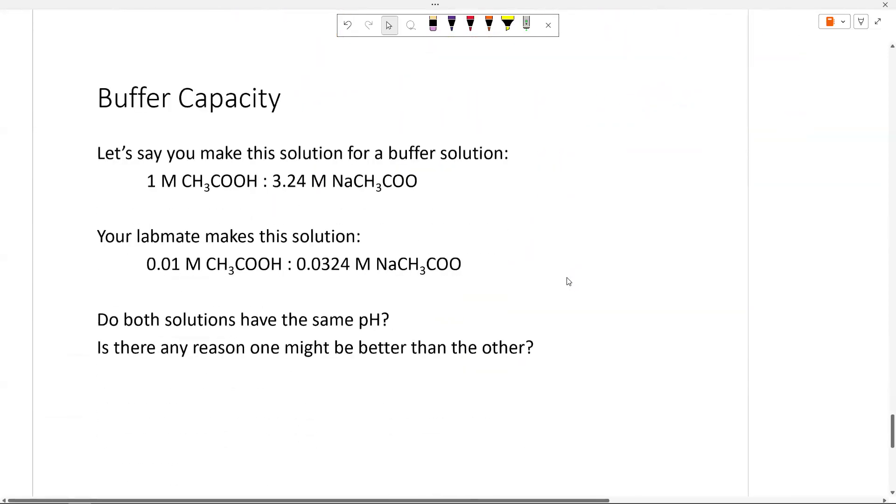Okay, real quick, buffer capacity. Let's say you made this solution: one molar acetic acid to 3.24 molar sodium acetate. So you're going to have a pH above the pKa. We've got more of the conjugate base. Your lab mate needs the same ratio, but with much lower concentrations, like 0.01 M acetic acid to 0.0324 M sodium acetate. Do they have the same pH? Yes. You could convince yourself of that by plugging into Henderson-Hasselbalch. The ratio is the same, so the pH will be the same. But this one has a much larger buffer capacity. These concentrations are really low. So it won't take a whole lot of acid or base to blow through all of the weak acid or weak base in your buffer, and then you'll no longer have a buffer.